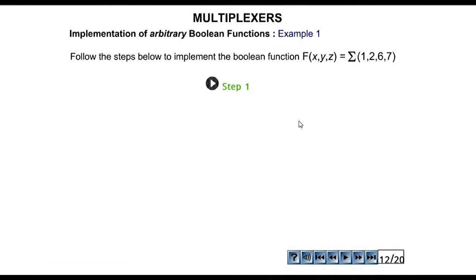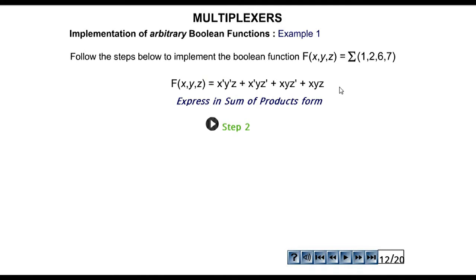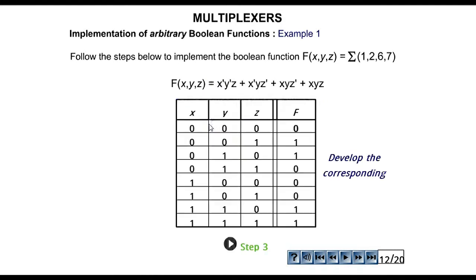Now it's time for us to design or implement logic functions using a multiplexer. Here is a function where the sum of minterms is 1, 2, 6, and 7. For minterm 1 we can write x̄ ȳ z, and for minterm 2 it's x̄ y z̄. We design the truth table, and the output F will respond with 1 at minterms 1, 2, 6, and 7, as you can see here.